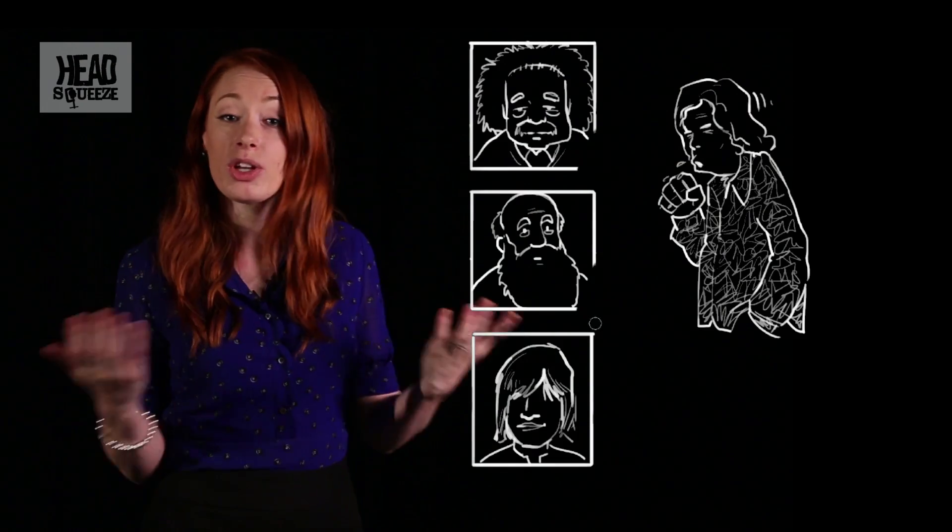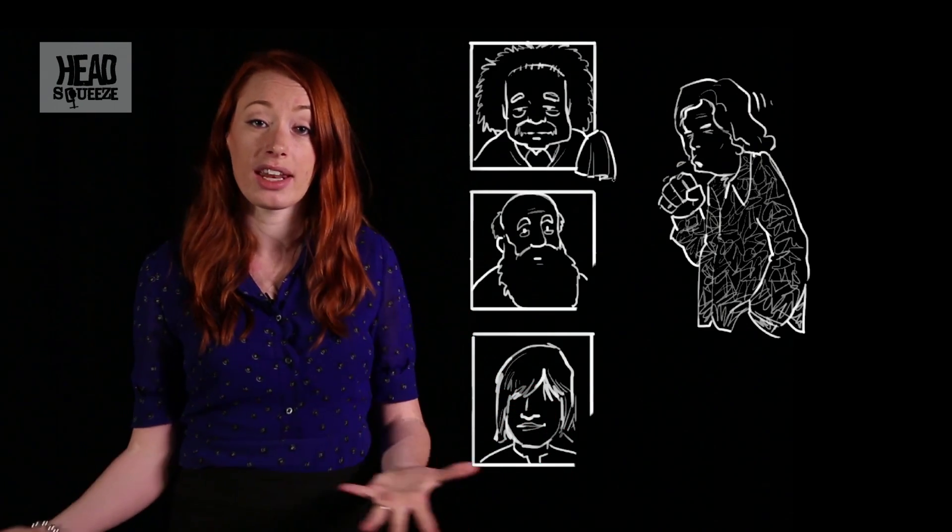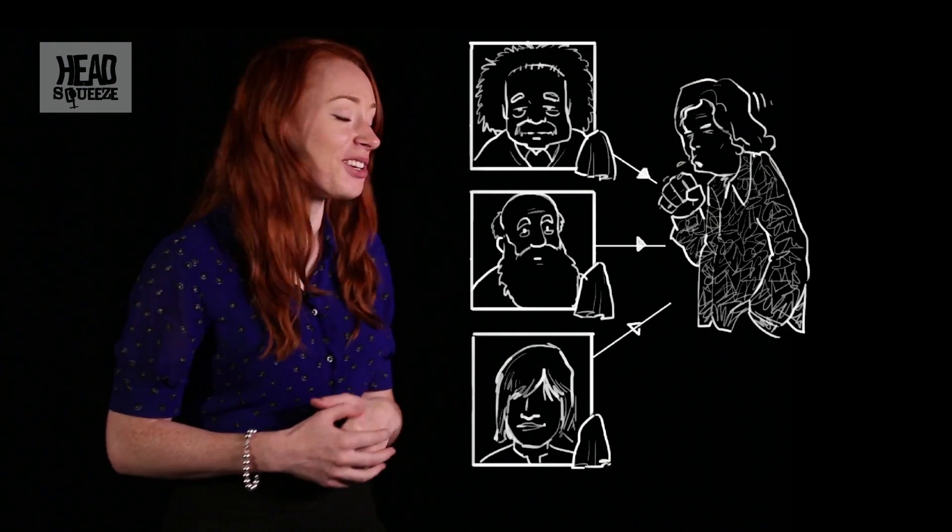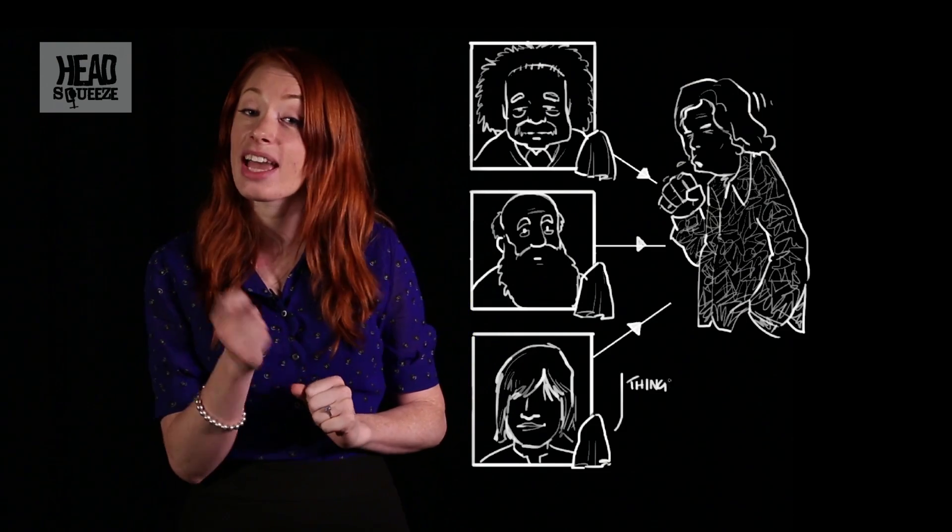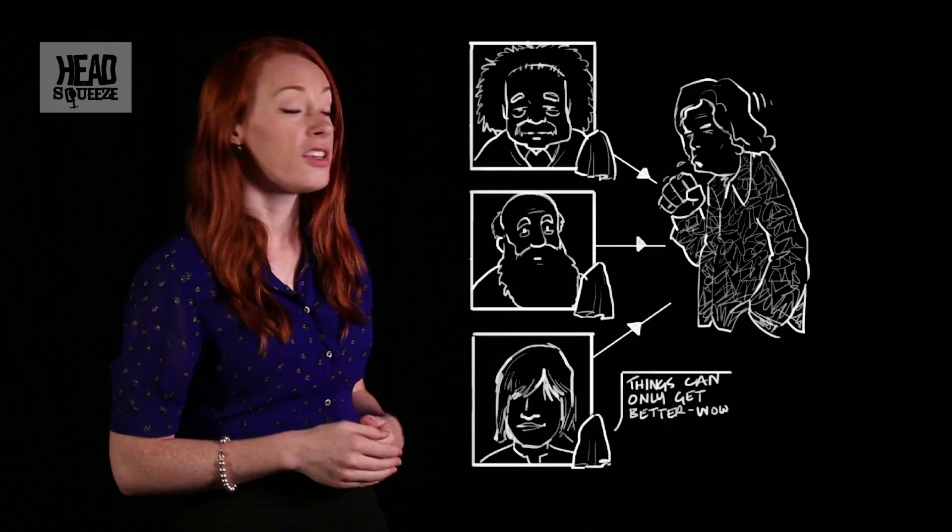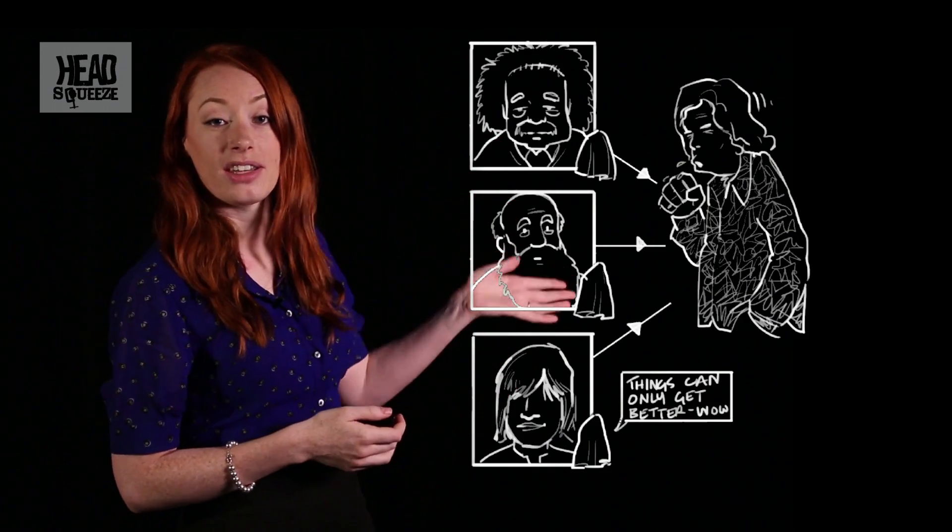Now if we pick one of the boys in this network at random, we've only got a one in four chance of getting to James. It's not very good odds at stopping our virus. But if we pick one of the boys at random, say the lovely Brian Cox here, and ask him to give the handkerchief to somebody that he's friends with, he's going to give it to James. So would Charlie Darwin and so would Bertie Einstein.